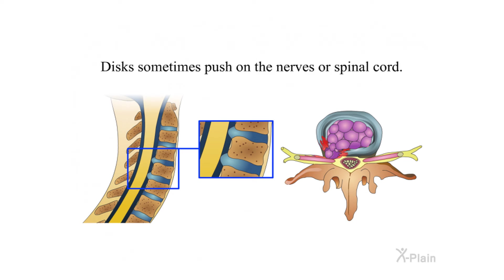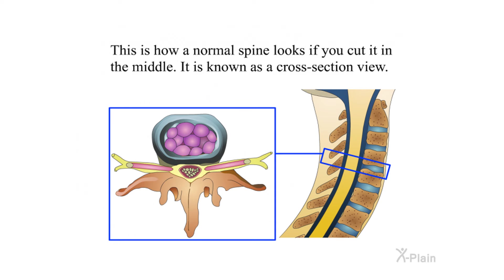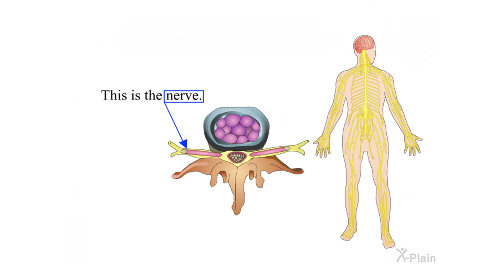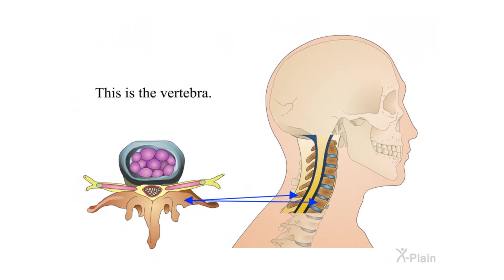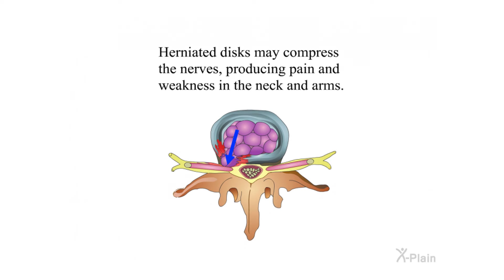Symptoms and their causes. Discs sometimes push on the nerves or spinal cord, causing pain, weakness, and numbness in the neck and arms. In a normal spine cross-section, you can see the disc, the nerve, and the vertebrae. In a herniated disc cross-section, the herniated disc may compress the nerves, producing pain and weakness in the neck and arms.